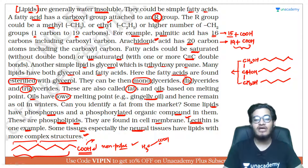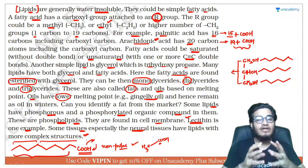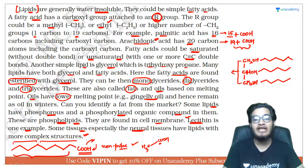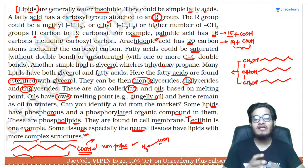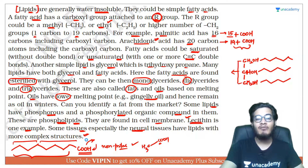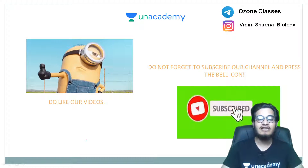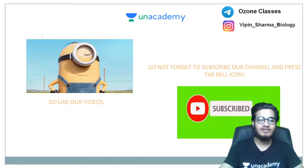Some tissues — especially neural tissues — have lipids with more complex structure। Neural tissues के lipids का बहुत complex structure रहता है। उदाहरण: sphingomyelin जो neurons की myelin sheath बनाता है — इसका structure far more complex है than simple fats and simple steroids।